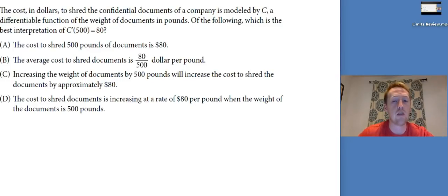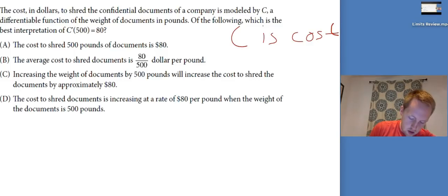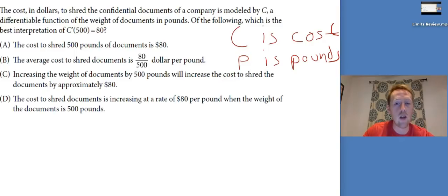This one's talking about the meaning. So the cost in dollars to shred the confidential documents of a company is modeled by C, a differentiable function of the weight of documents in pounds. Of the following, which is the best interpretation of C prime of 500 equals 80? So we've got C prime of 500 equals 80. The 500 is the pounds. C is cost. And they didn't give us a variable for it, but let's call it P for pounds. The derivative has units of Y over X. So it's going to be dollars per pound.